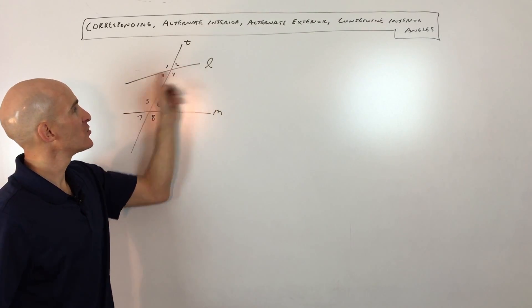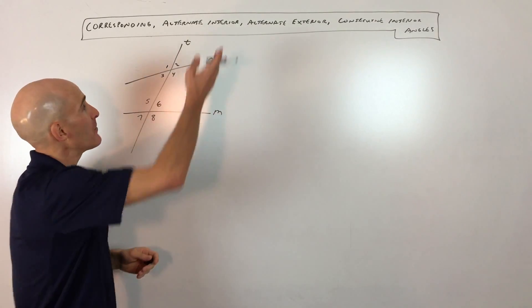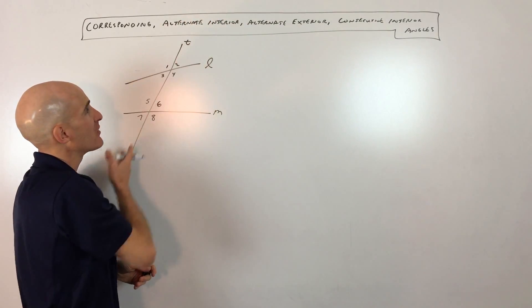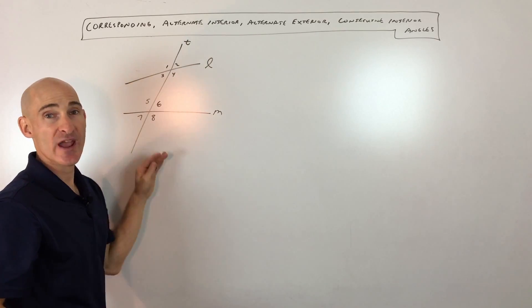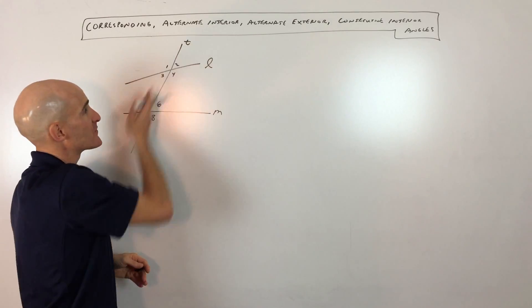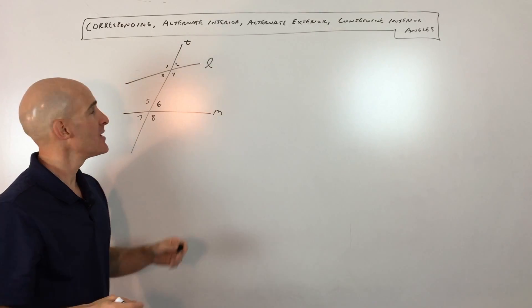We have two lines. We'll just call these two lines L and M, and they're cut by a third line, which we're going to call T. That's the transversal — it traverses or cuts across those two lines.